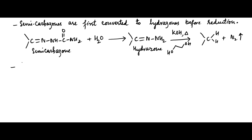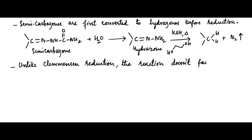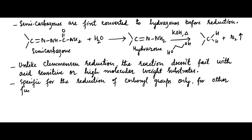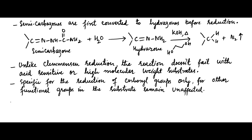Wolf-Kishner reduction is preferred because, unlike Clemmensen reduction, this reaction doesn't fail with acid-sensitive and high molecular weight substrates. Wolf-Kishner reduction is specific for the reduction of carbonyl groups only, because other functional groups in the substrate remain unaffected. However, this reduction is not suitable for alpha-beta unsaturated ketones.